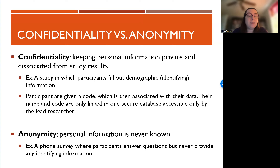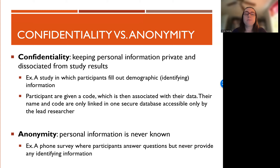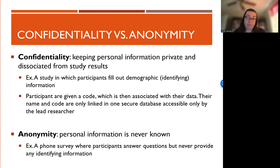But then there's anonymity — this is where we never knew the information. So if you're doing a phone survey or a survey where participants don't give their name or birthday. With confidentiality, we have the information and are just taking steps to keep it private. With anonymity, we never had the information. Anonymity is definitely safer because there's no way for information to get leaked since we don't have the information. So anonymity is preferable when possible.